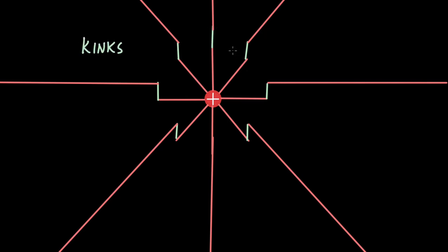There is a kink formed here, here, and here, but none is formed along the axis of movement — none is formed vertically. It is this kink or collection of kinks which is responsible for electromagnetic radiation. These kinks move outward with the speed of light.